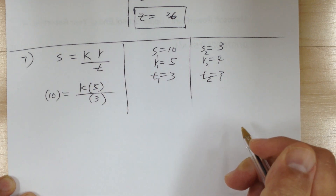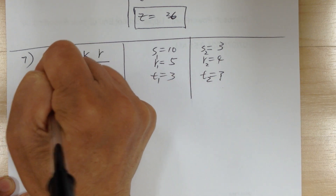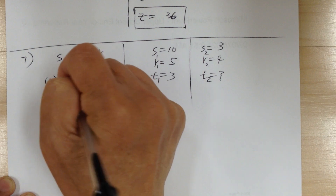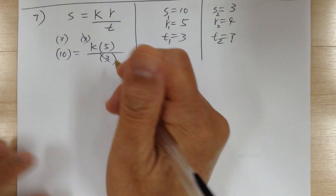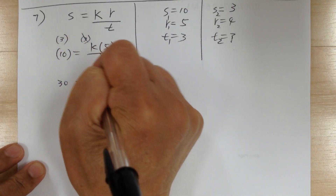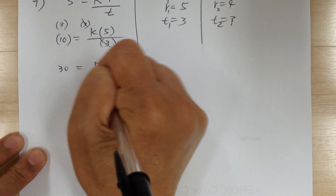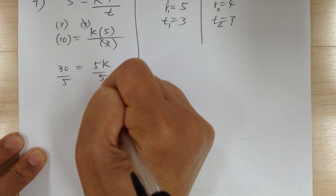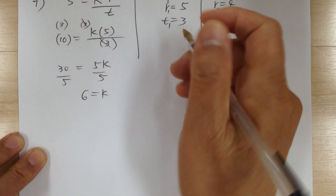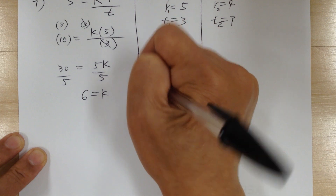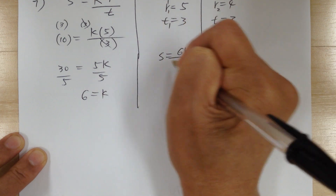First, get rid of the fraction — multiply both sides by 3, so this cancels out. You get 30 equals 5k; divide both sides by 5. So k equals 6. Update your equation: s equals 6r over t.